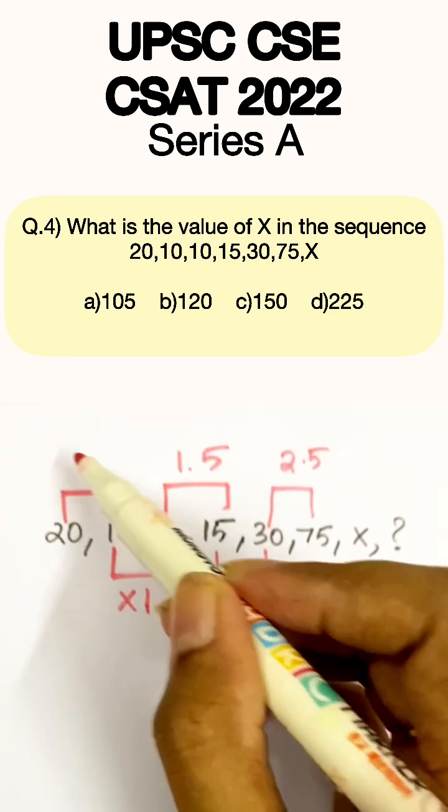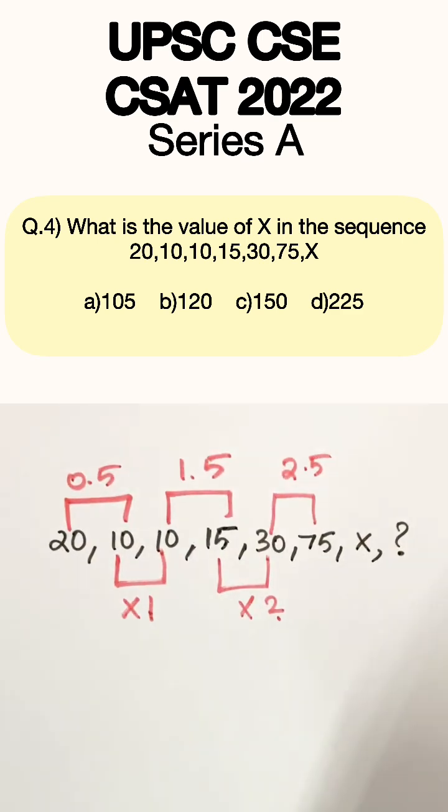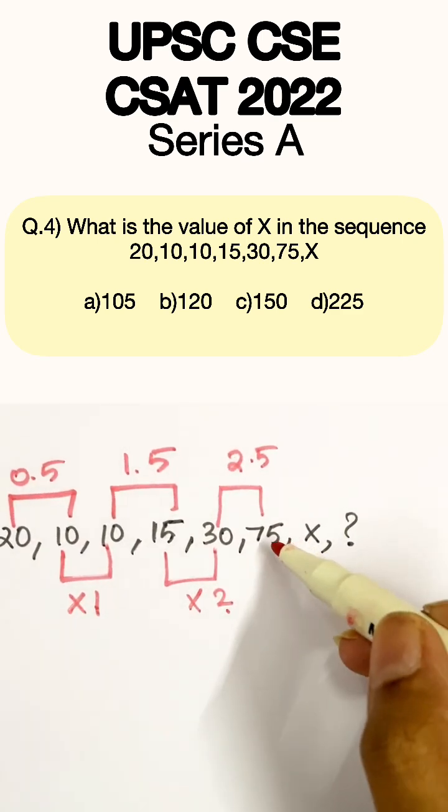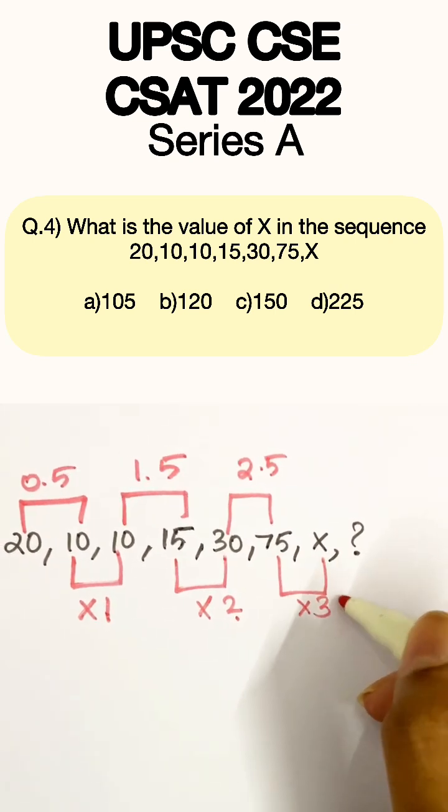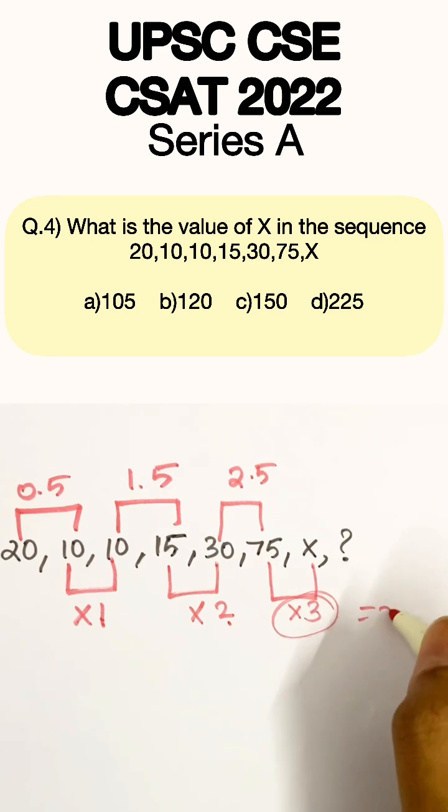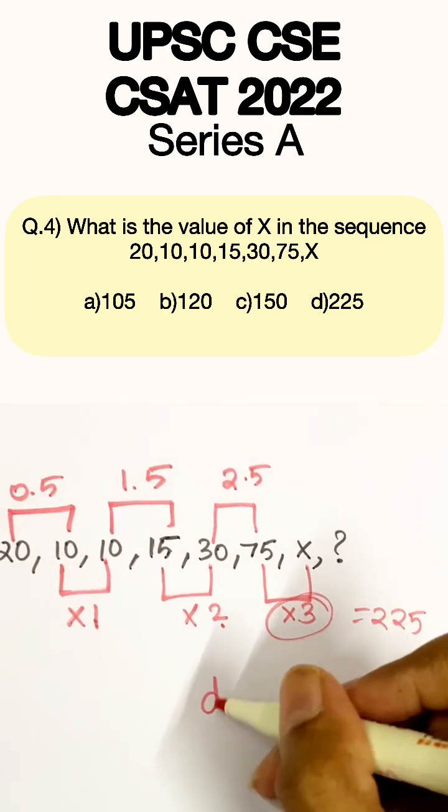And here if you see 20 into 0.5 will give you 10. So x is easily supposed to be 75 into 3, right? Which is 225. So option D is the answer.